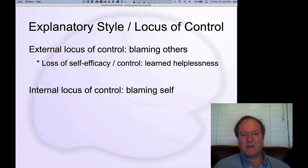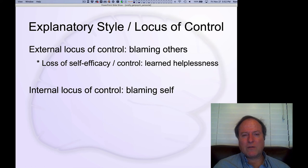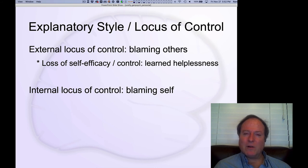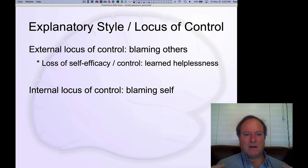One last thing before we close: thinking about how we understand our own self in the context of social dynamics. This goes under the name of explanatory style and locus of control constructs — how you attribute negative outcomes, whether you blame the situation, other people, or external factors versus yourself. Internal locus of control means you focus on your own role — 'that was my bad' — whereas external locus of control means blaming other people.